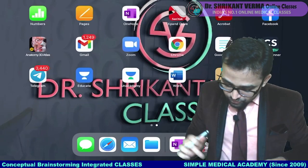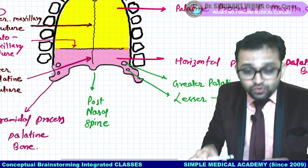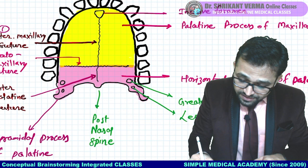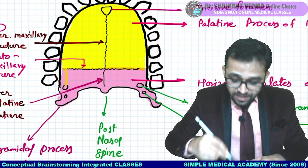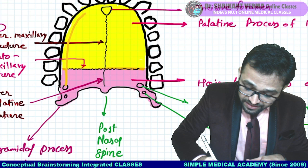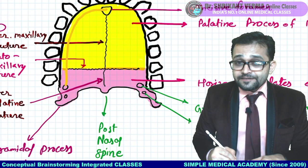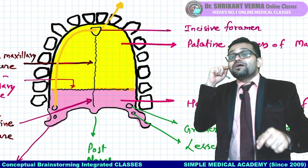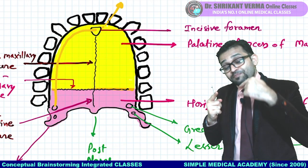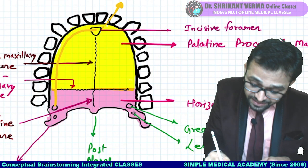Nerves are passing here. From the greater palatine foramen a nerve comes out — the greater palatine nerve — and runs forward, enters the incisive fossa, goes up, and proceeds toward the nose. So this nerve from oral cavity goes to the nasal cavity. Then a nerve from the nasal cavity comes down through the same foramen into the palate. MCQs come from here.